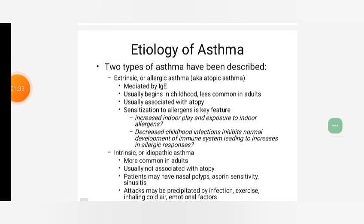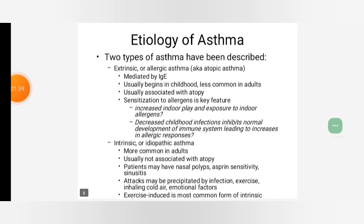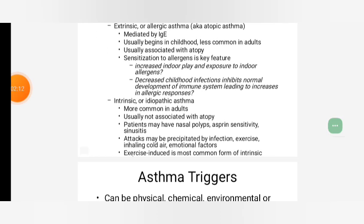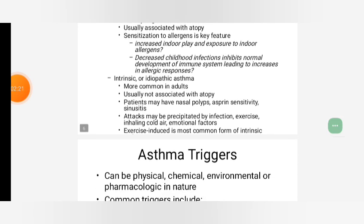Etiology of Asthma: Two types of Asthma have been described. Extrinsic or allergic Asthma, and Intrinsic or idiopathic Asthma. Extrinsic or allergic Asthma is mediated by IgE, usually begins in childhood, less common in adults, usually associated with atopy. Sensitization to allergens is a key feature. Increased indoor play and exposure to indoor allergens, decreased childhood infections, inhibit normal development of the immune system, leading to increases in allergic responses.